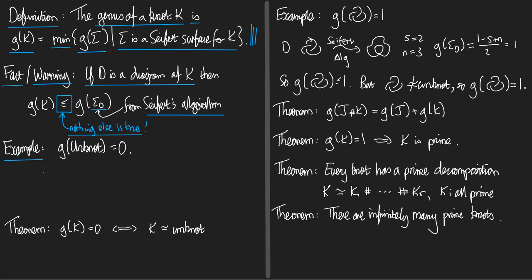So that tells us exactly that the minimum of the genera of the Seifert surfaces for the unknot is zero. So the genus of the unknot is zero. Here's the theorem. This theorem isn't proved in the course, it's too difficult for us. It says that the genus is zero if and only if k is equivalent to the unknot. So what this tells us is that the genus is an excellent invariant because it can tell the unknot apart from everything else.